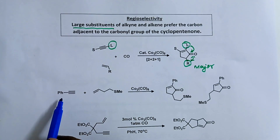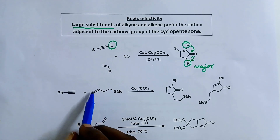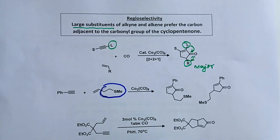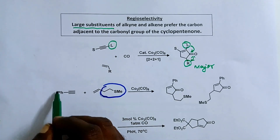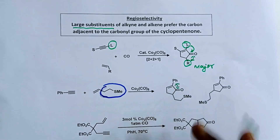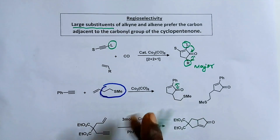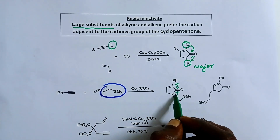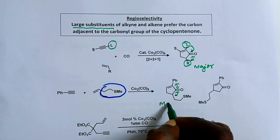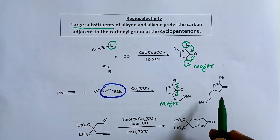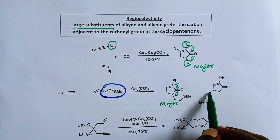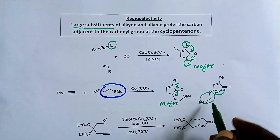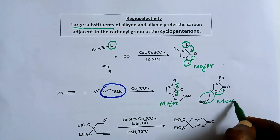Here phenylacetylene is the alkyne and there is an alkene bearing another substituent. Look at the product — the phenyl group of the alkyne comes adjacent to the carbonyl group, and the substituent of the alkene also comes closer to the carbonyl. So this is the major isomer. But in the other arrangement, although phenyl is closer to carbonyl, the alkene substituent is away from carbonyl — so that is the minor regioisomer.